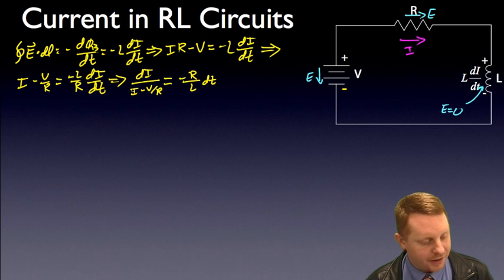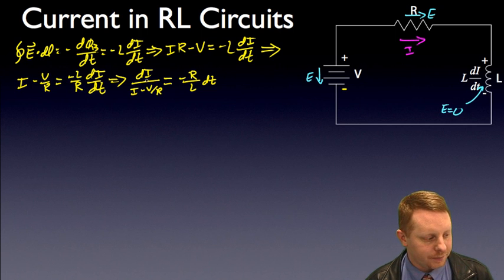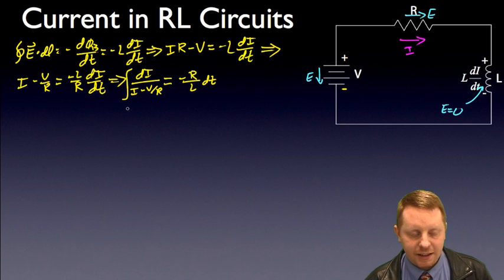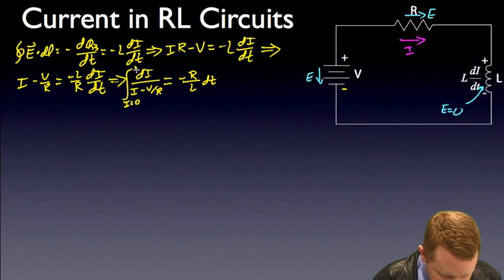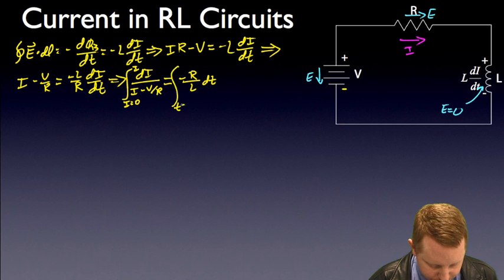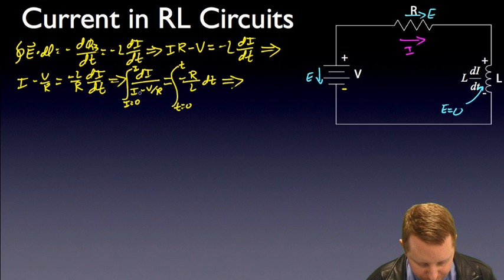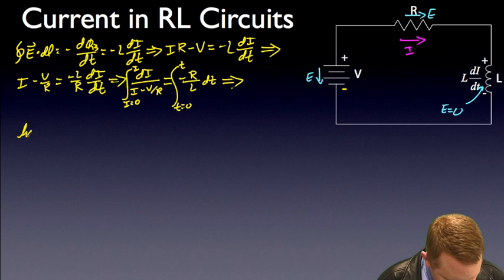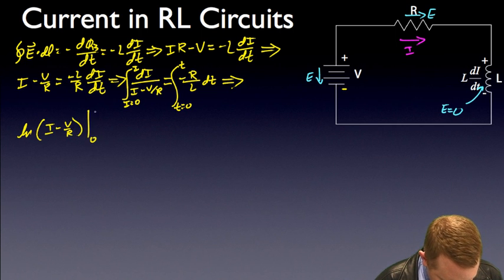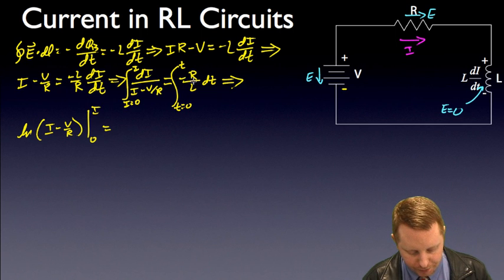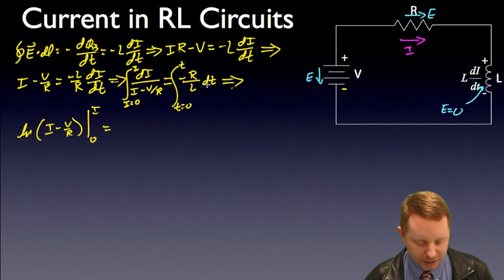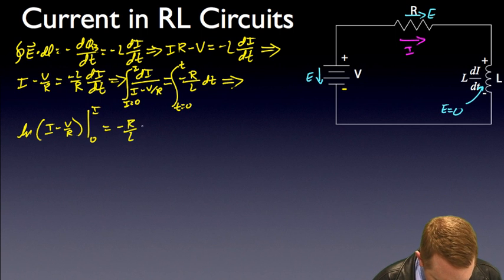We've got our differential of I and I on the same side, and as you look at that it looks kind of like the form du/u, so I'm already thinking natural log. So I'm going to take the integral of both sides — on the left-hand side integrating from our initial current of 0 to some final current I, and on the right-hand side integrating from time t equals 0 to final time t. The left side is of the form du/u, so that's going to be the natural log of (I minus V/R) evaluated from I equals 0 to I, and the right side is minus R/L times t.